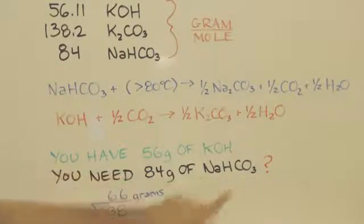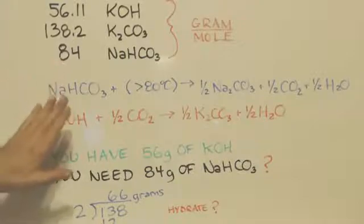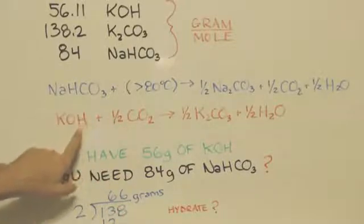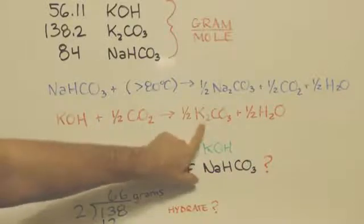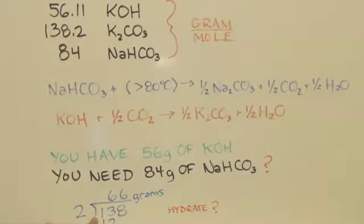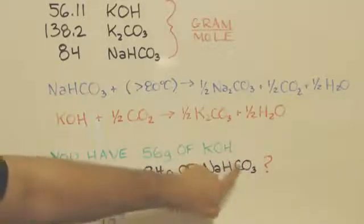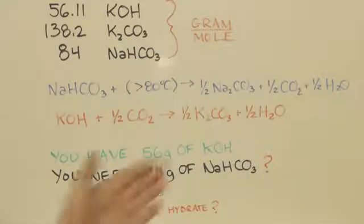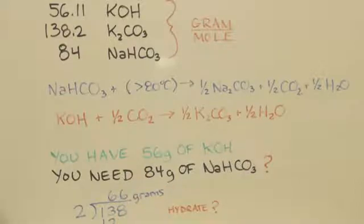One mole of that will give you a half a mole of the carbon dioxide, and that's what you need if you have 56 grams. So I would need a whole mole of this, and a mole of this is 84 grams. But for the reaction itself, that's what you need. So how much are you going to make? 66 grams, because one mole will make a half a mole of the potassium carbonate, which is 138 grams divided by two.